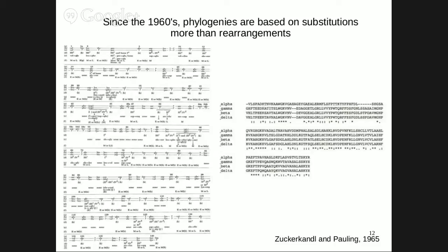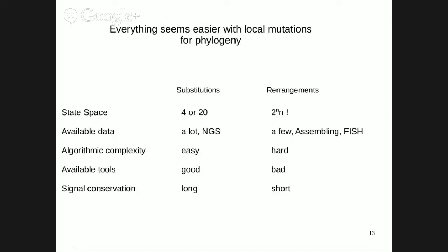This is something Gergely already showed you — it's the old alignment by Zuckerkandl and Pauling in 1965. This is the alignment as it is in the paper of 1965, and this is the same alignment as it has been computed again recently by recent tools. And then they were doing phylogenies with substitutions, and finally phylogenies with substitutions have been much more successful. Although discovered much later, models with substitutions are much more involved and much more successful for several reasons.